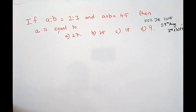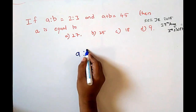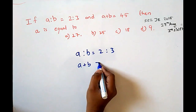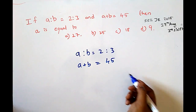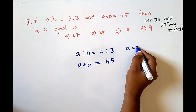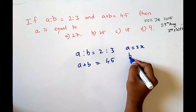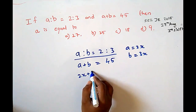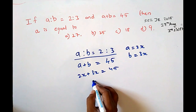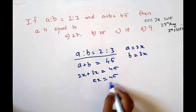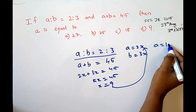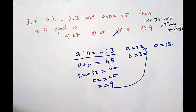If A to B equals 2 is to 3 and A plus B equals 45, find A. We assume A = 2x and B = 3x from the ratio and substitute: 2x + 3x = 45, so 5x = 45, giving x = 9. Substituting back, A = 2 × 9 = 18. The answer is 18.